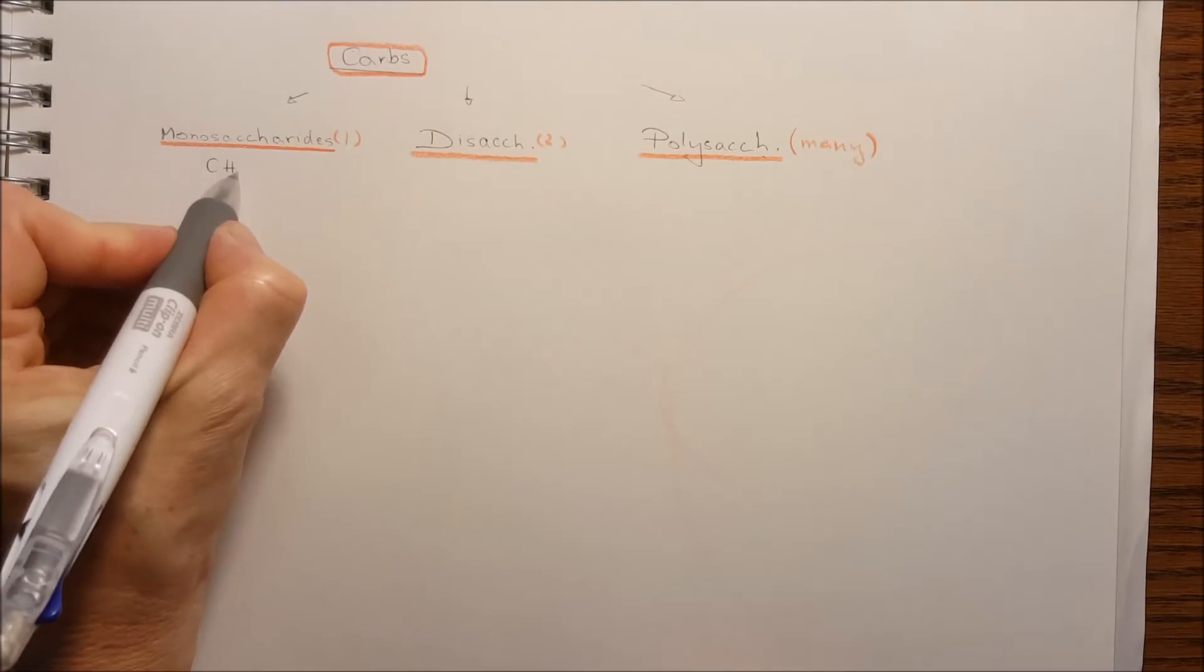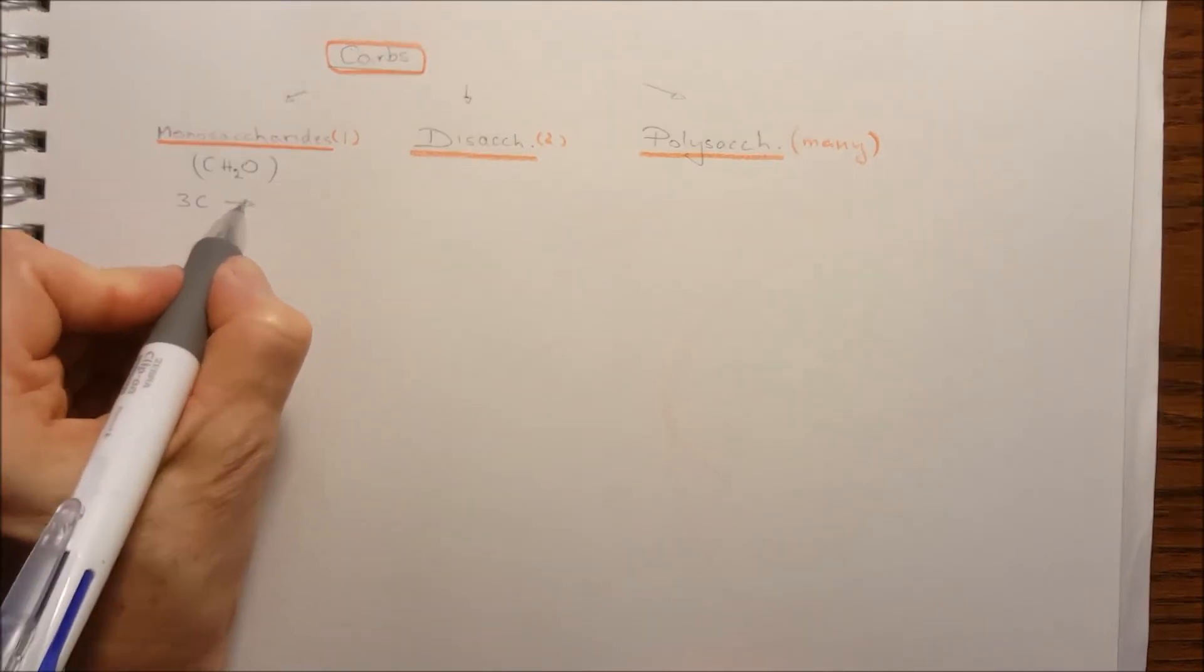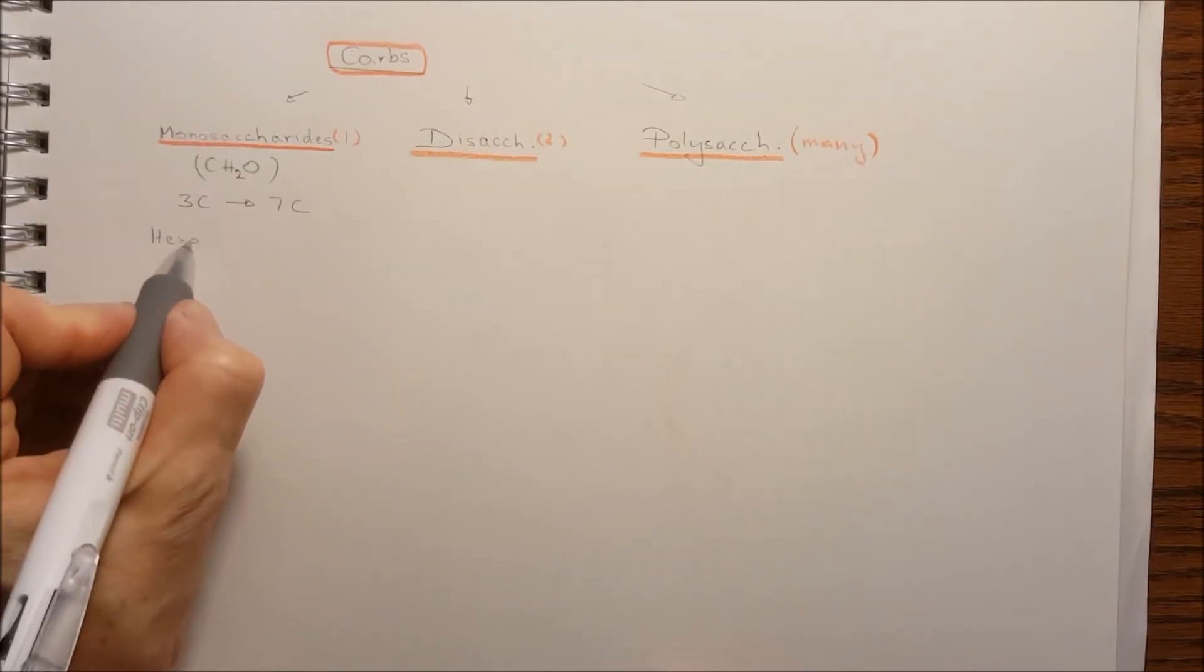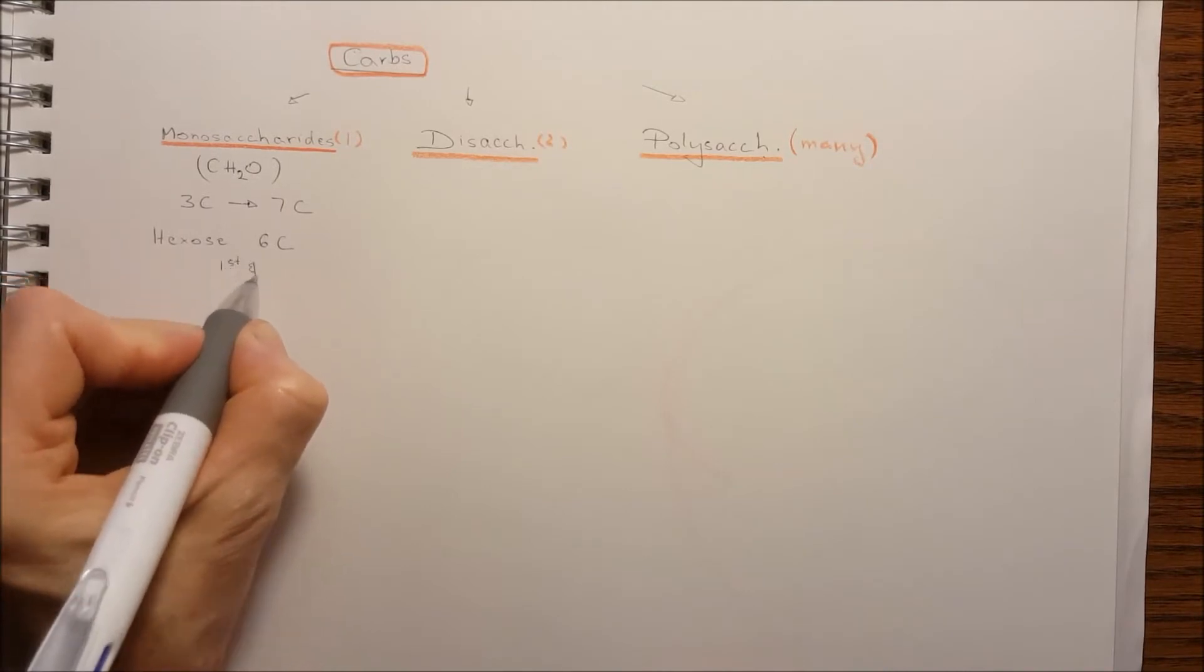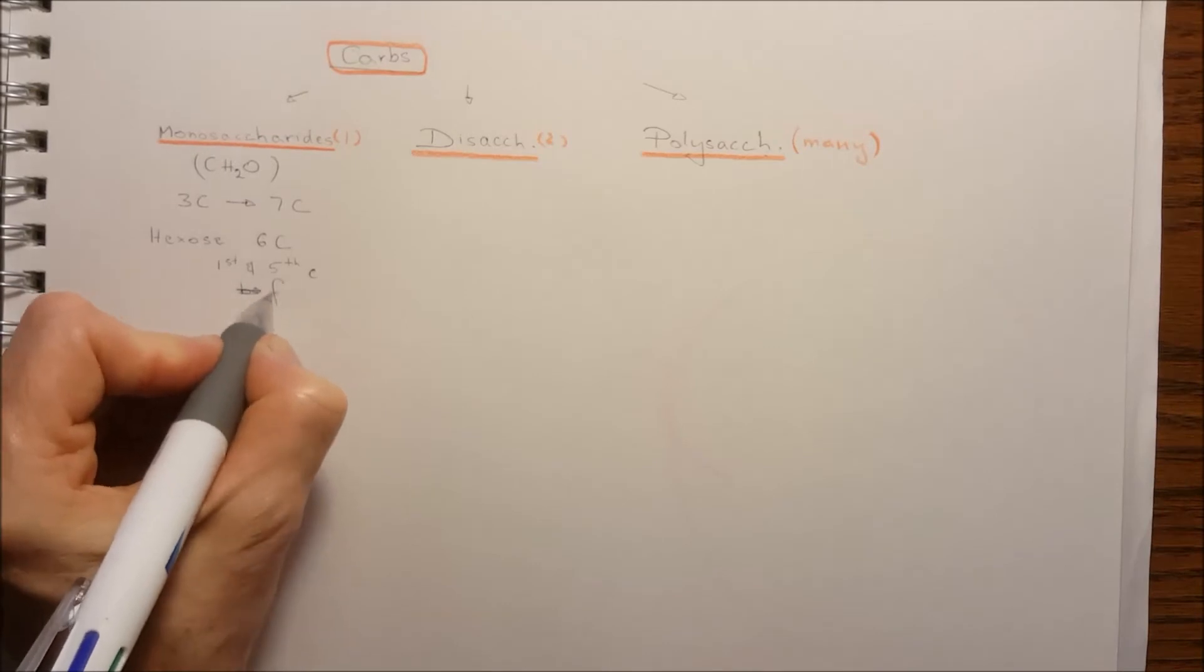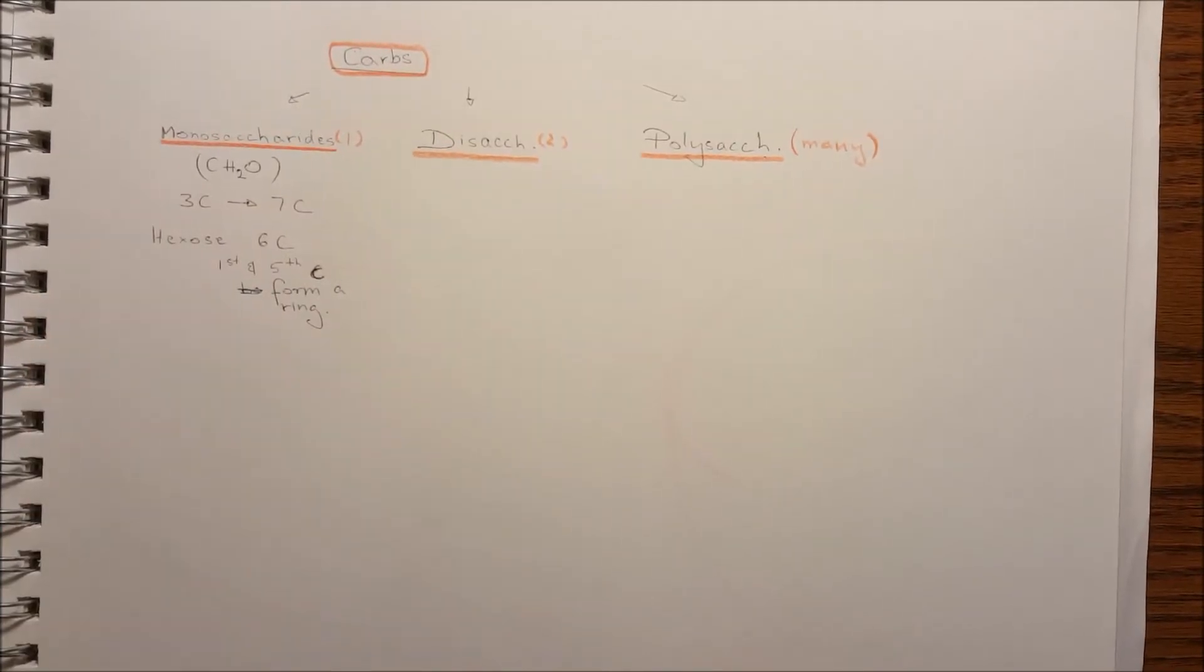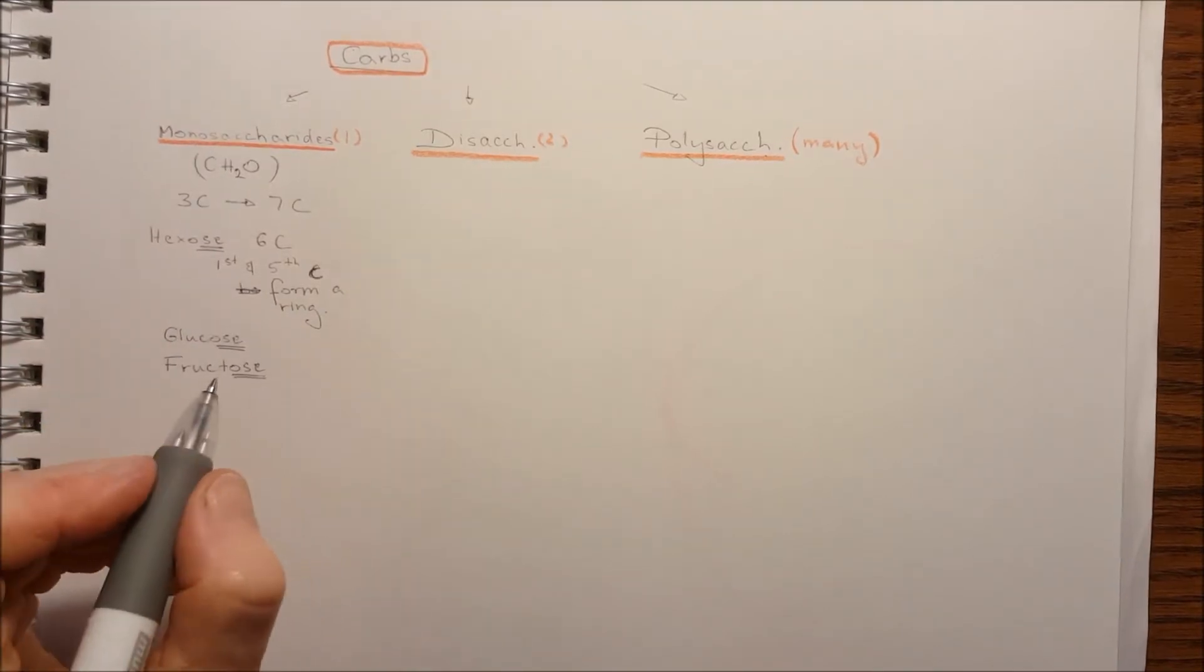The monosaccharides general formula is CH2O. It can contain three carbon up till seven carbon. The six carbon chain is usually called the hexose. The first and the fifth carbon usually form a ring form. Hexoses are the glucose and the fructose, for example.